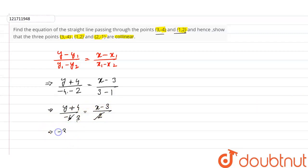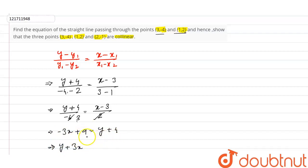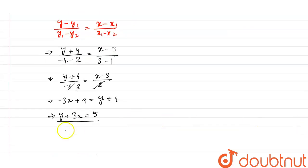We multiply to get -3x and minus a plus 9, and y plus 4. Simplifying, 3x equals y plus 3x and 9 equals minus 9, giving minus 5 equals plus 5. Therefore, the equation of the straight line is 3x + y - 5 = 0.